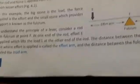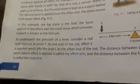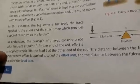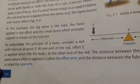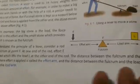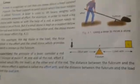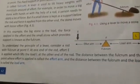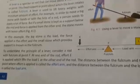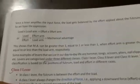To understand the principle of a lever, consider a rod with fulcrum at point F. At one end of the rod, effort E is applied, which lifts the load L at the other end of the rod. The distance between the fulcrum and the point where effort is applied is called the effort arm, and the distance between the fulcrum and the load is called the load arm.